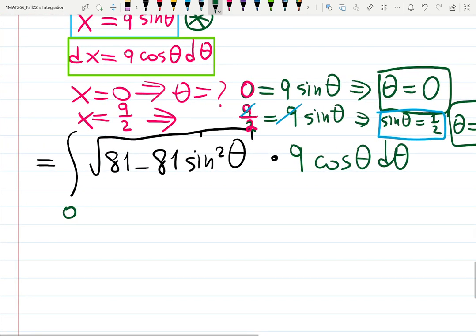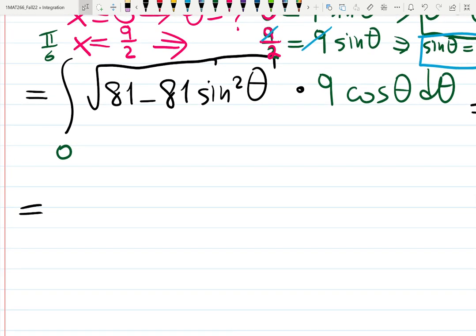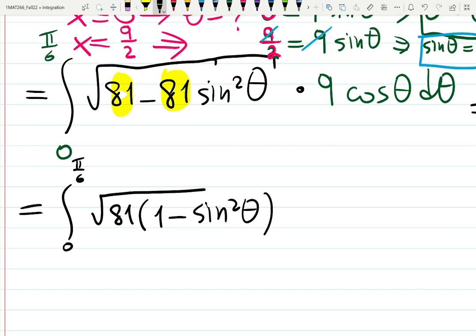So the upper limit is π/6, and the fun part starts now. We just hope that everything collapses into a very simple thing, and it will. The integral from 0 to π/6 of √81(1 - sin²θ) times 9cosθ dθ.